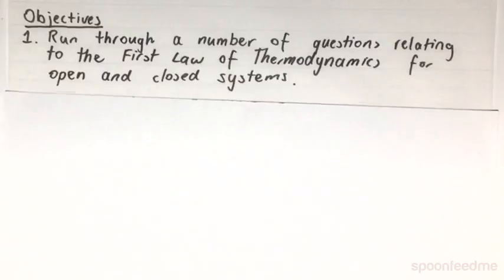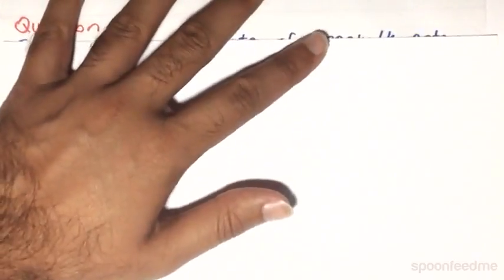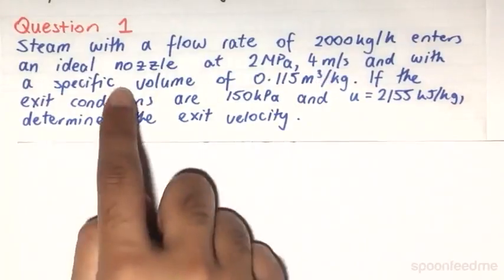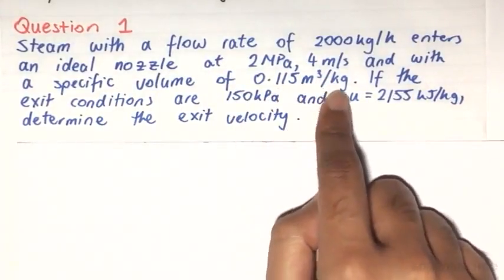So we start off with three simple examples. The first question says the following. Steam with a flow rate of 2000 kg per hour enters an ideal nozzle at 2 MPa, 4 m/s and with a specific volume of 0.115 m³ per kg.